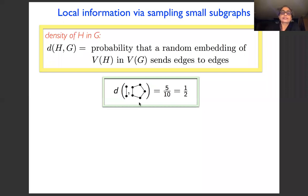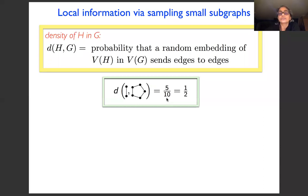Here's a simple example. My big graph is a pentagon and the small graph H is an edge. I'd like to know the density of edges inside the pentagon. There are five edges in the pentagon — five ways to embed the small edge. But a graph on five vertices could have had ten edges (five choose two). So the density of the edge in the pentagon turns out to be one half.